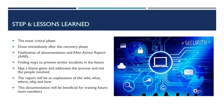Finally, step six is lessons learned. This is considered the most critical phase of all because you're finalizing documentation and figuring out what to do to prevent these things in the future. This is done immediately after the recovery phase and involves an executive summary and an after-action report, or AAR. The report will be an explanation of the who, what, where, why, and how, discussed with everyone involved. It's important to note that this isn't a blame game — it's about addressing the process of how the incident occurred, not what an individual did wrong. It's also an opportunity to discuss the response effectiveness and how it could be improved in the future. This documentation will also be used in training for future team members.